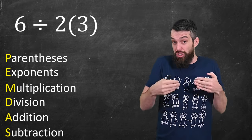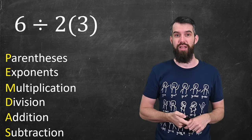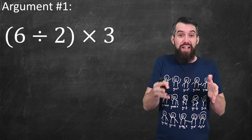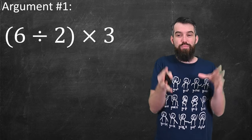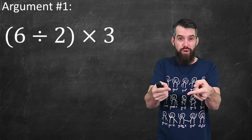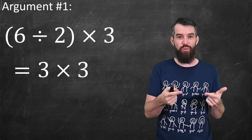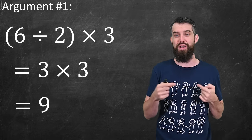There's actually two different arguments that are presented at this point. The first says this can be interpreted as 6 divided by 2, sort of thought of as together in brackets, and then multiplied by 3. If you do this, well, 6 divided by 2 is just going to be 3, so 3 times 3 is then 9. The final answer is 9.